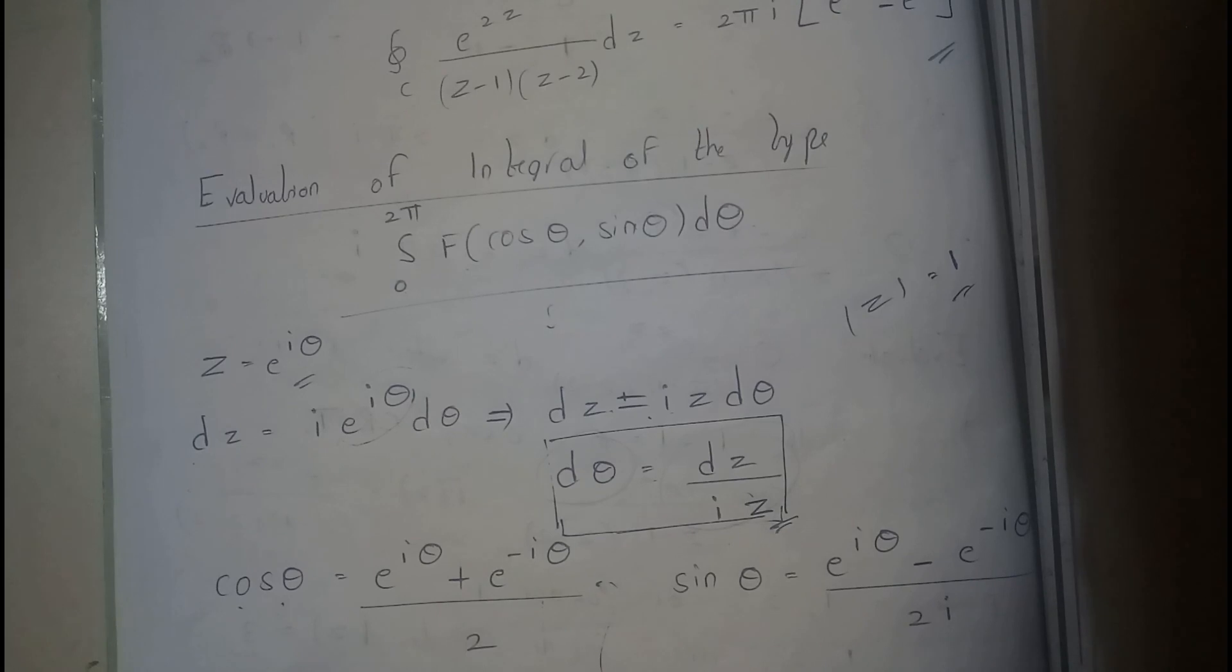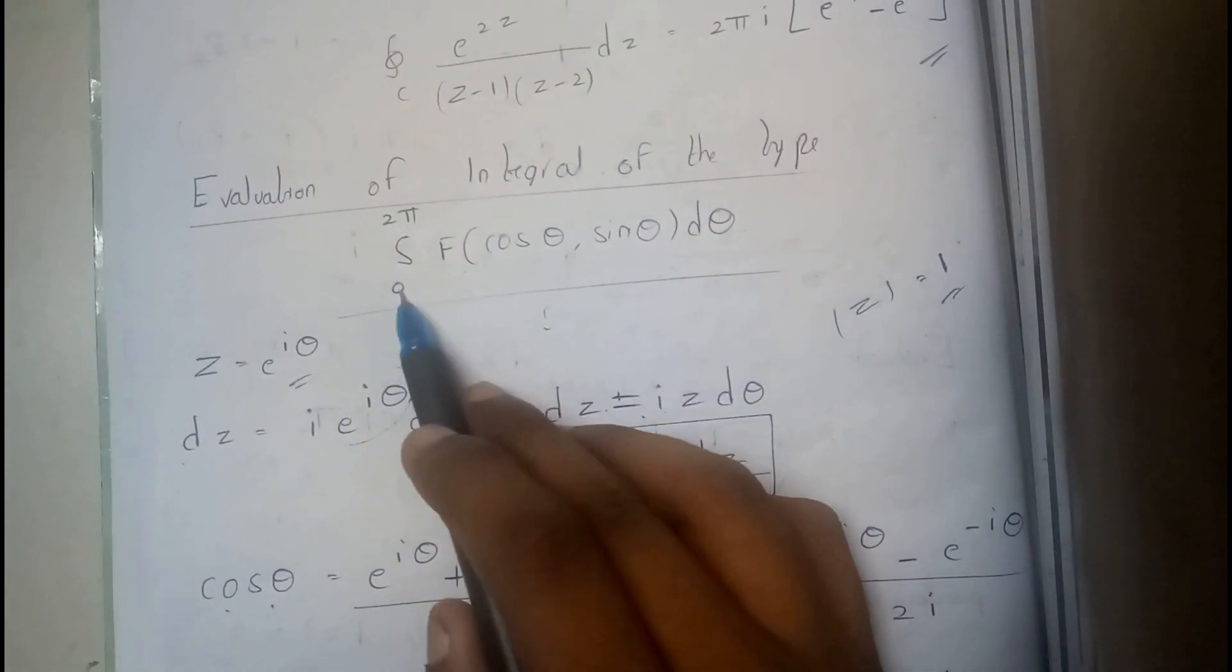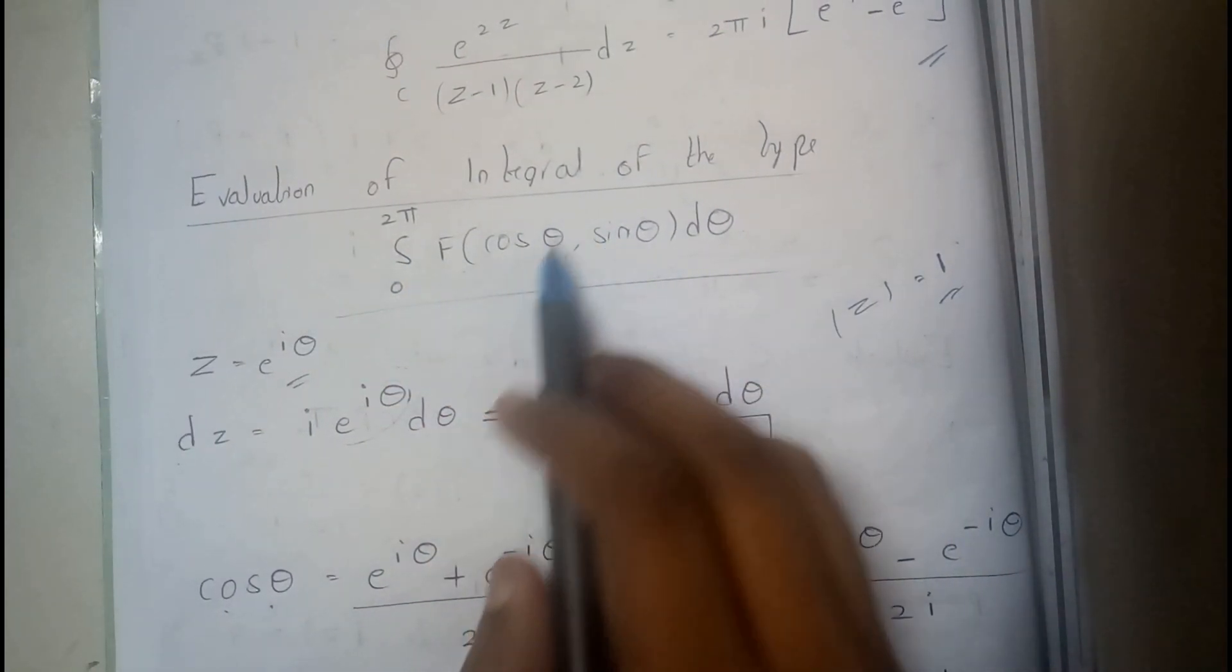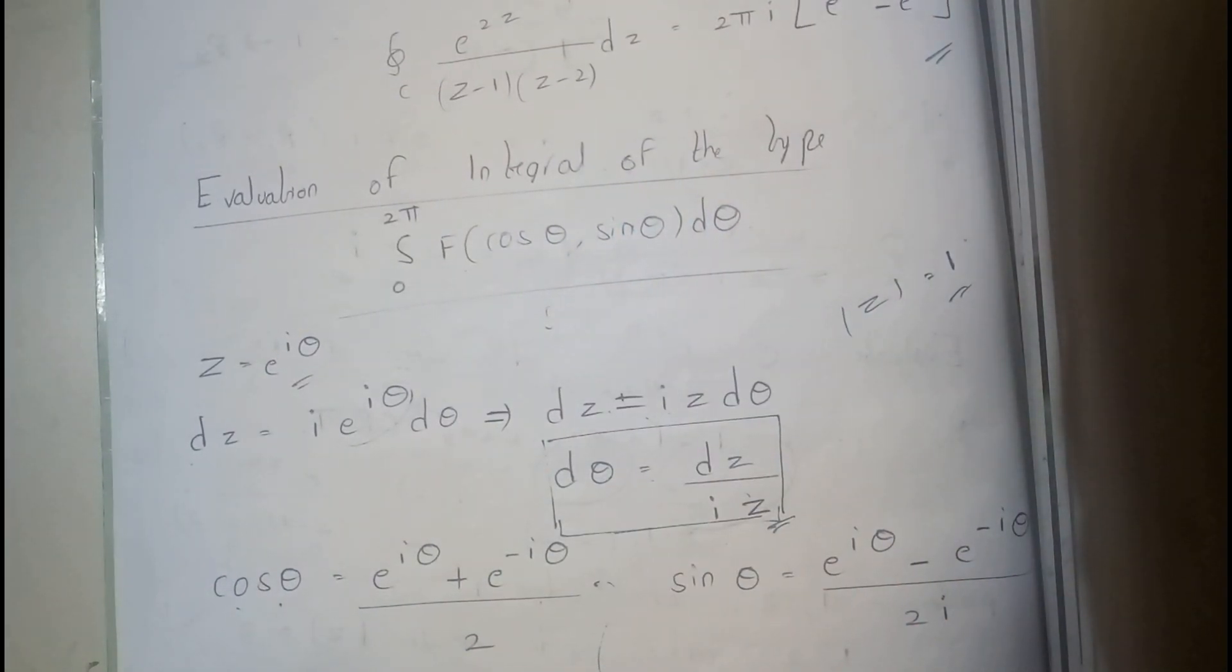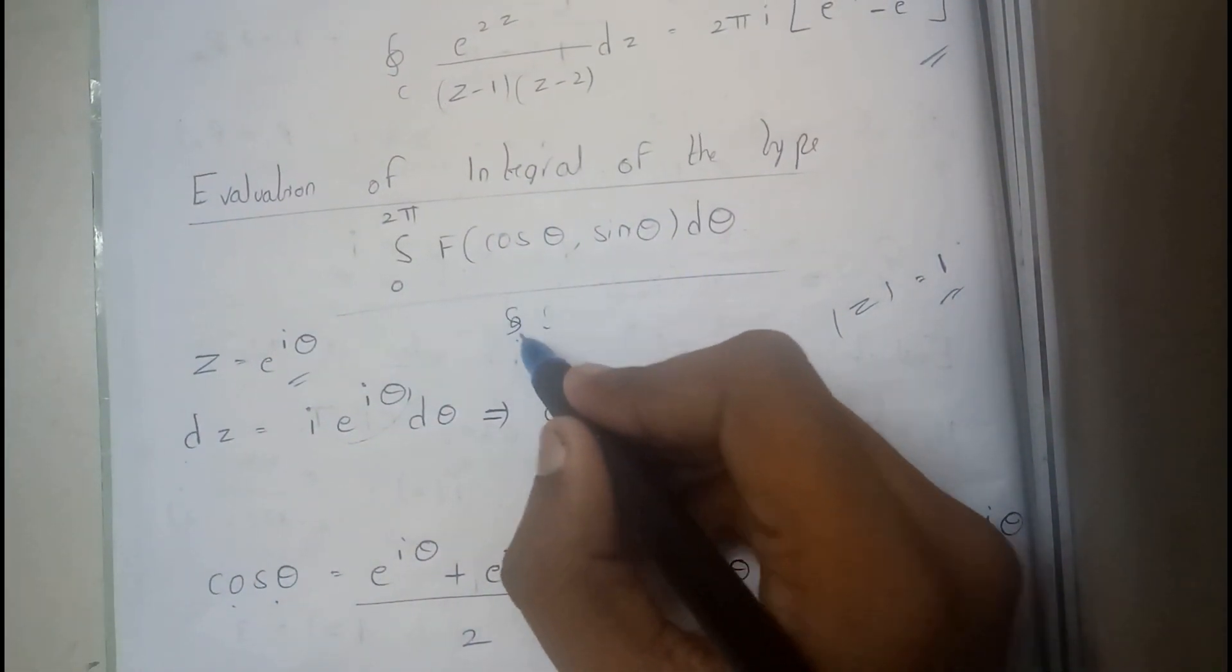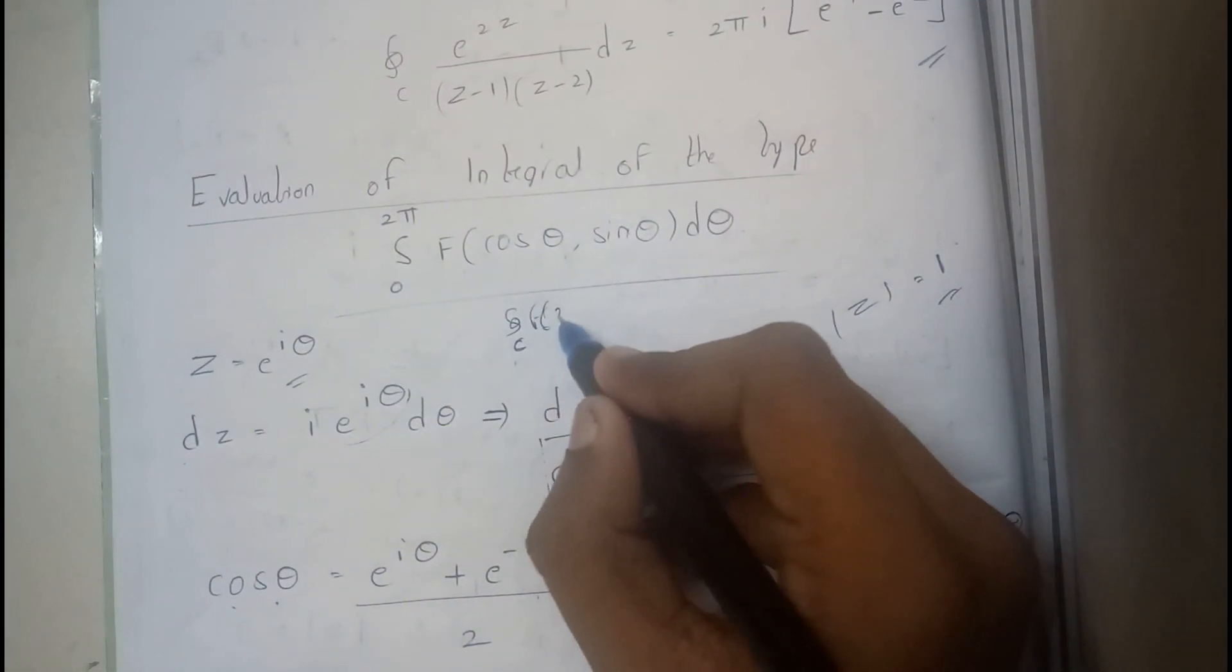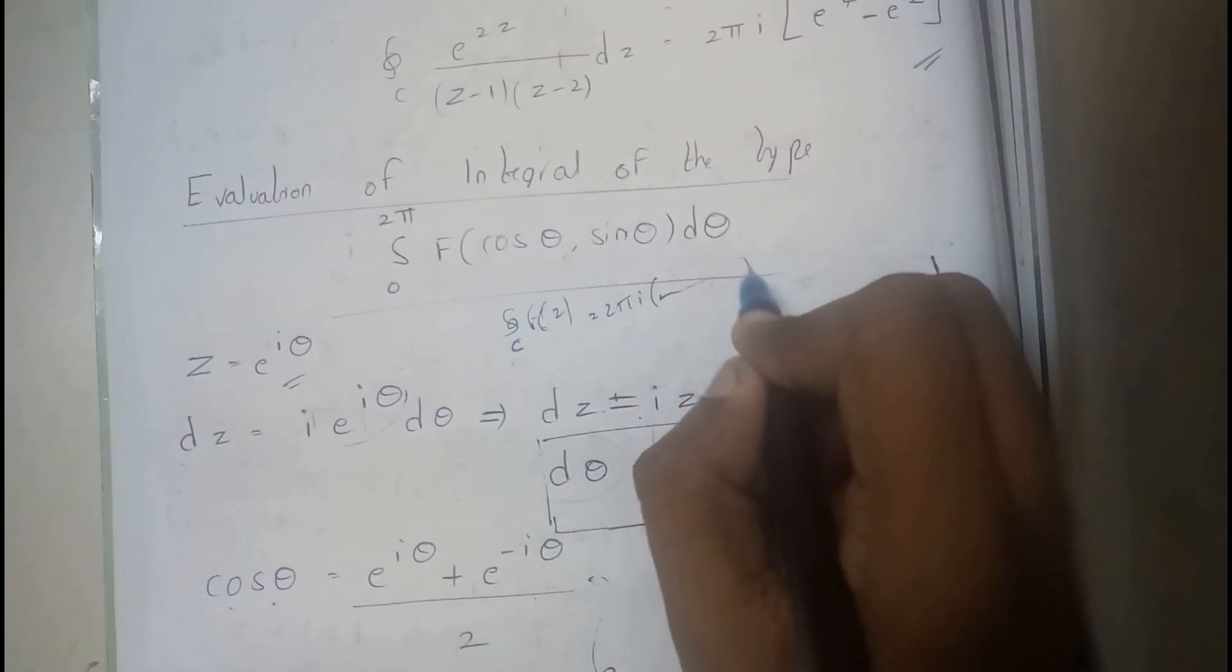So basically we are having small equations for these. The given question will be in terms like this: integral 0 to 2π f of cos or in terms of sine or both, into dθ. So basically you will be converting this form initially into closed circle c of f of z equals 2πi into residue.